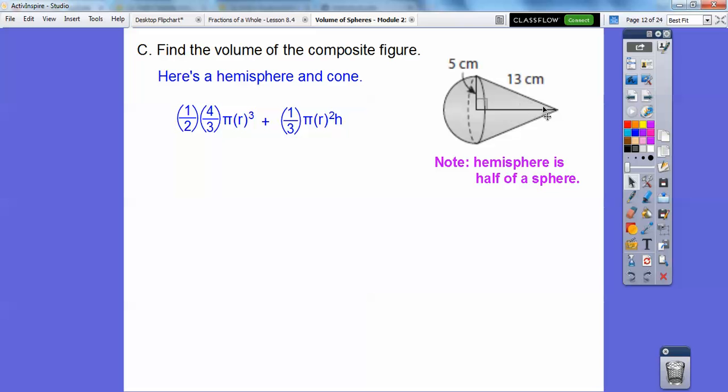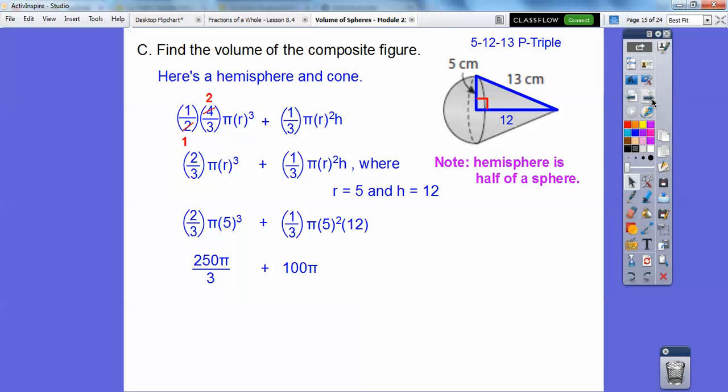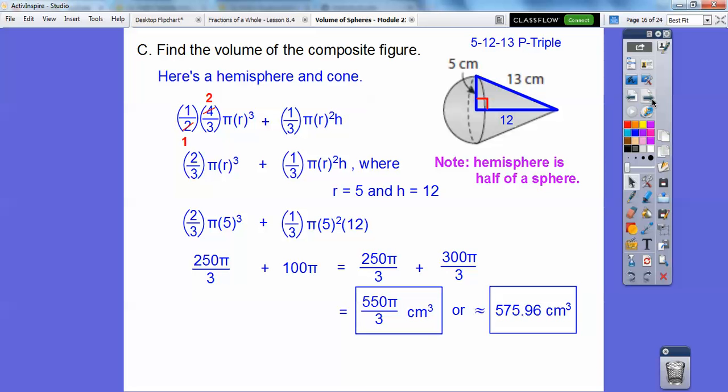So 5 blank 13, do you remember the Pythagorean triple that goes with 5 and 13? It's 12, okay? You can do the Pythagorean Theorem, 5 squared plus blank squared equals 13 squared, you'll get 12. Anyway, so put that in, and we add them together, and we get about 550 pi thirds centimeters cubed, or about 575.96 centimeters cubed, okay?